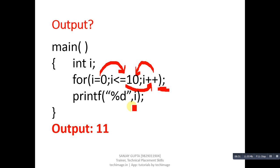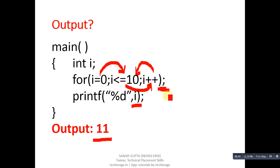Whenever we place a semicolon just after the for loop, the statements connected with the for loop automatically disconnect, and the loop repeats only the condition and increment/decrement internally. After termination, the statements written just after the for loop execute only one time.